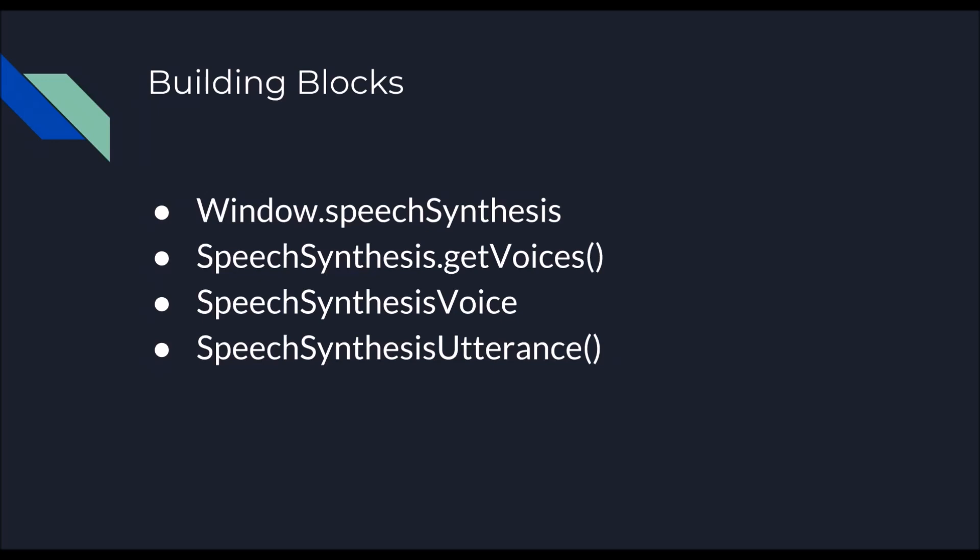The type of voices returned from the getVoices function is of SpeechSynthesisVoice type. We primarily need the name of the voice for this example, but it can be better if we also know the language of the voice we are using. Then there is the SpeechSynthesisUtterance constructor, which should be used to input the text that we want the API to convert to speech. We can configure the utterance object by providing values like voice, pitch, rate, etc.